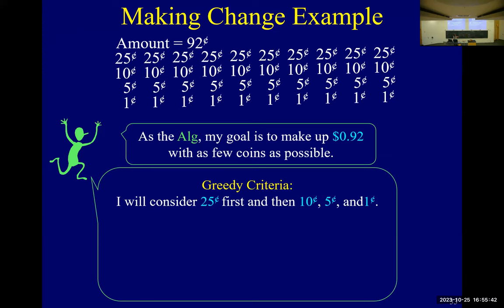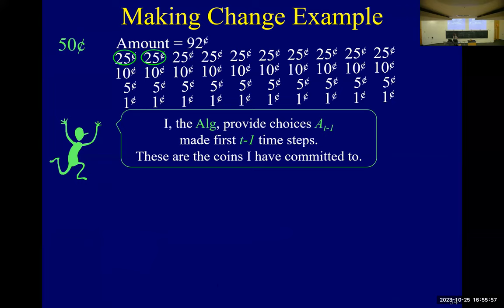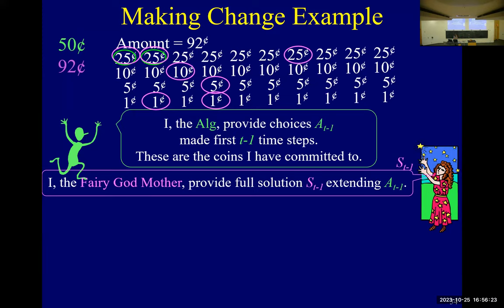Here's just the algorithm again - everybody remember what the algorithm is. So we've jumped into the middle of the algorithm. Then you can say: let A_{T-1} be what the algorithm has done so far. I always like a picture, so draw a picture of what it might look like. Then we say, by the loop invariant, let S_{T-1} be a solution that extends it and is valid and ideally is optimal.